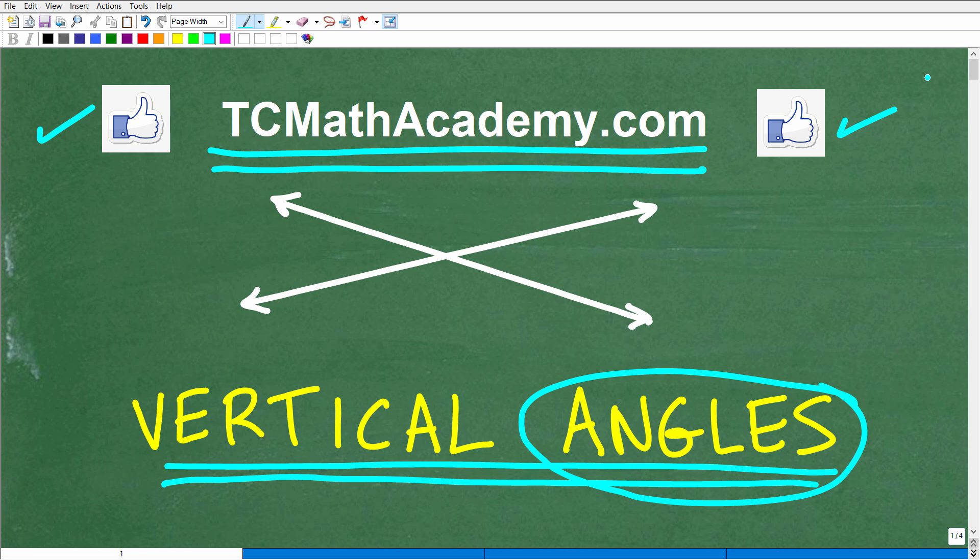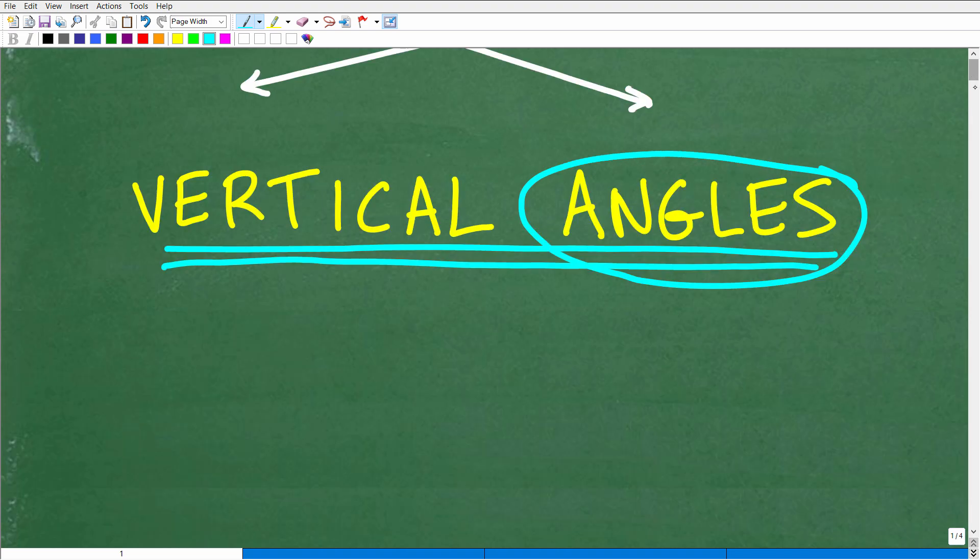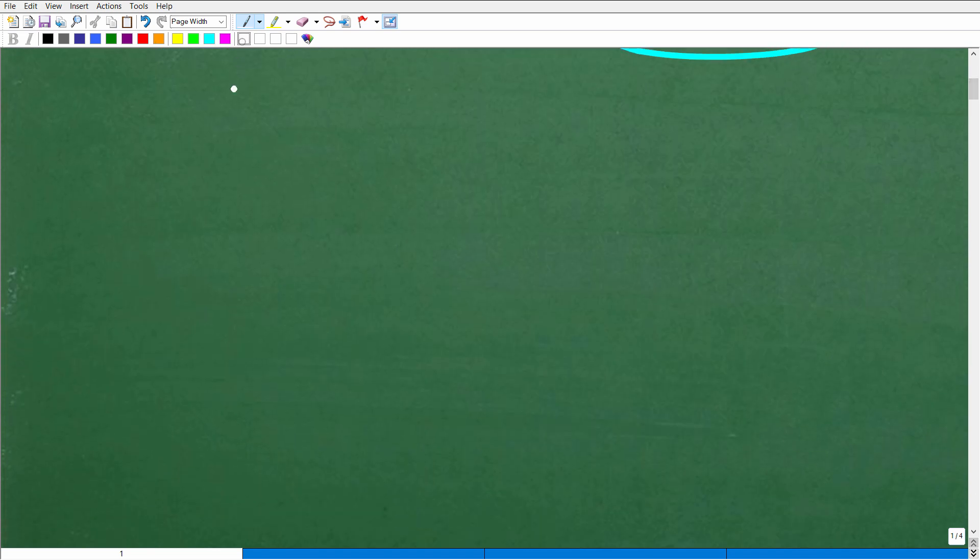So why don't you complete this sentence and put your answer into the comment section: Vertical angles are what? Vertical angles are what? Well, if you said vertical angles are equal, that indicates to me that you know what vertical angles are.